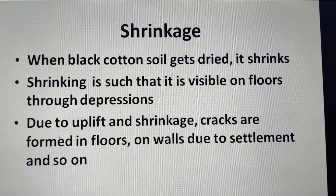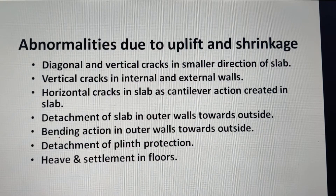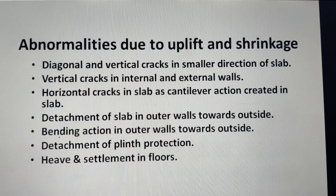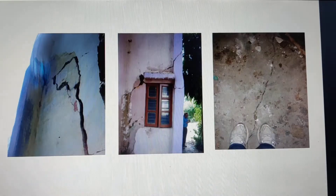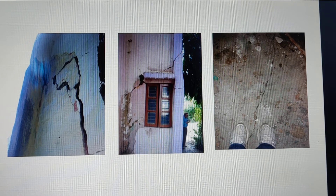Black cotton soil poses a lot of problems. You will find diagonal and vertical cracks in smaller directions of slabs in buildings, vertical cracks in internal and external walls, horizontal cracks in slabs due to cantilever action, detachment of slab in outer walls towards outside, bending action in outer walls towards outside, detachment of plinth protection, and heave and settlement in floors. Looking at these photographs, the cracks are so wide that it becomes unsafe to use these buildings, and on the right side you can see the floor showing cracks.